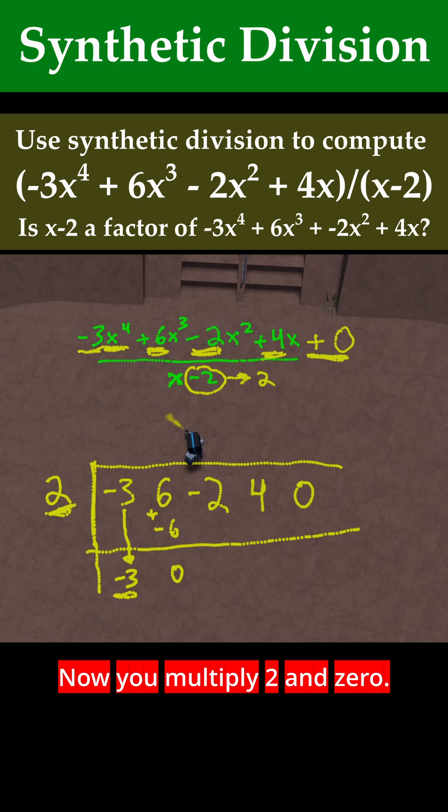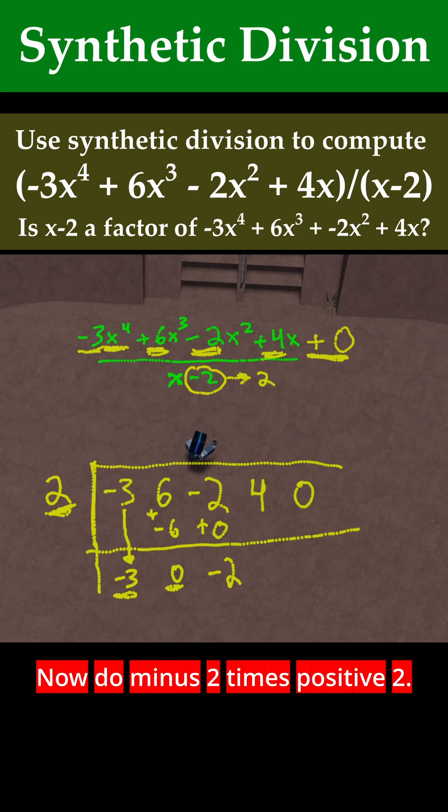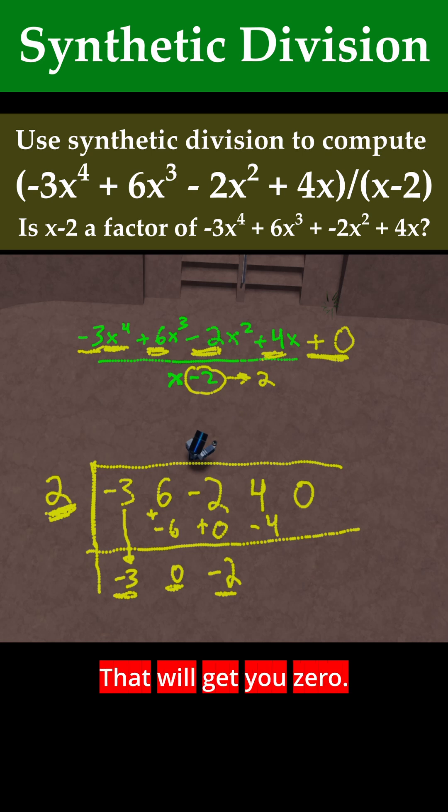Now you multiply 2 and 0. 2 times 0 is just 0. Now do -2 + 0, that's just going to be -2. Now do -2 times positive 2, that'll get you -4. And then do 4 + (-4), that will get you 0.